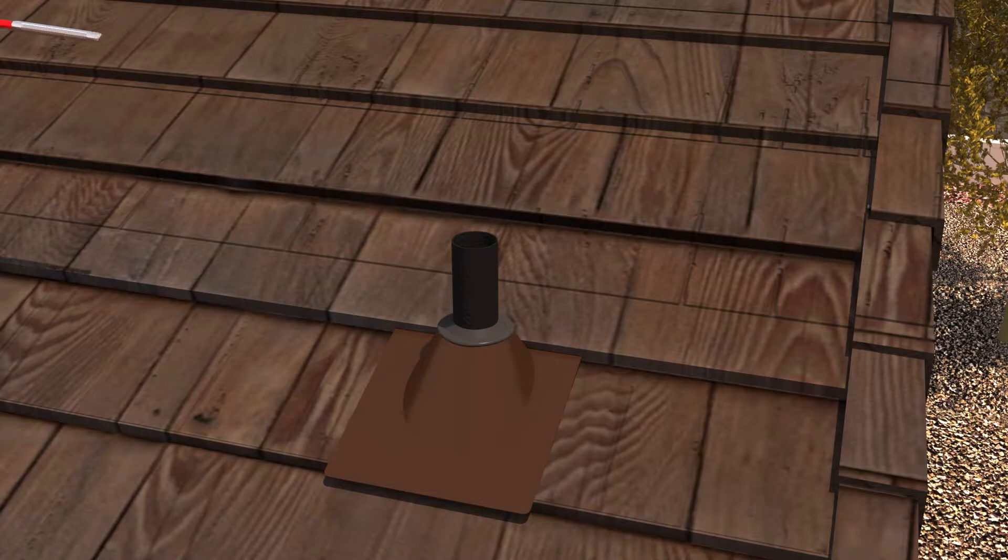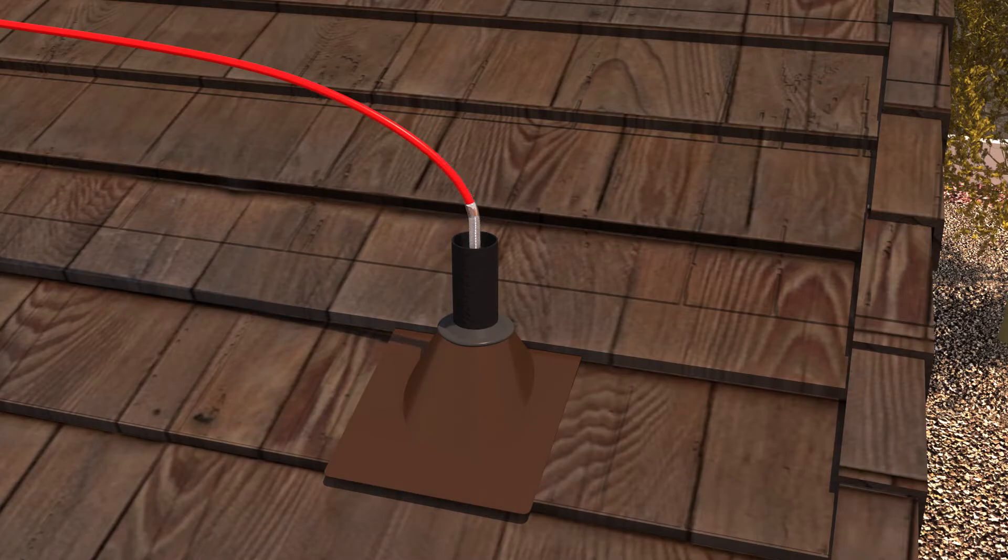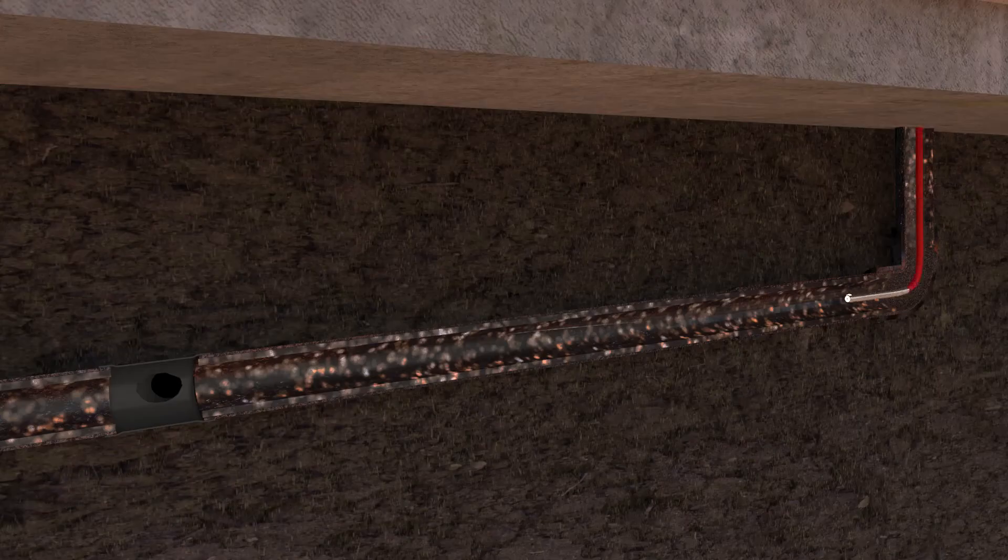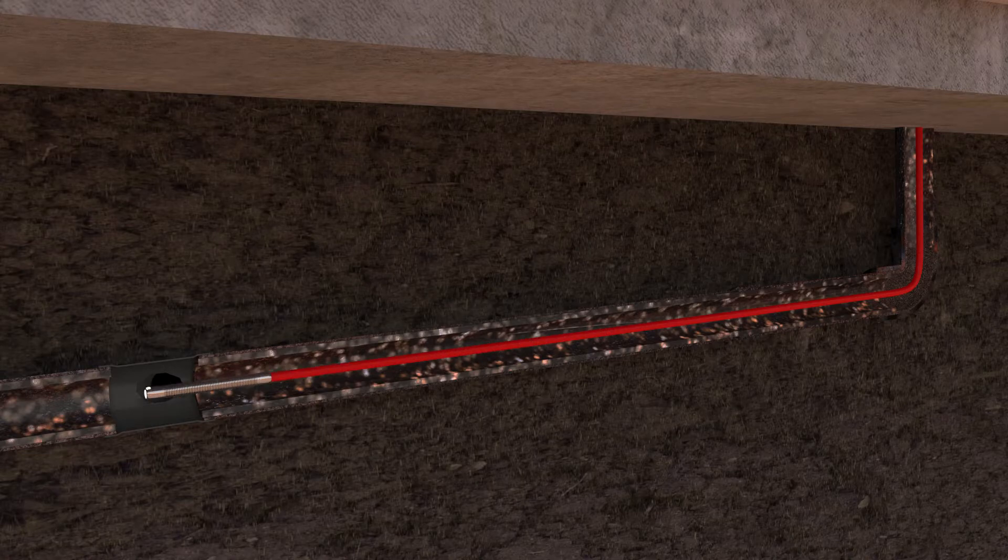We begin by inspecting your sewer line from either a clean-out in the yard or a vent on the roof. A small pipe camera is inserted that can identify any cracks, scale or root intrusion.